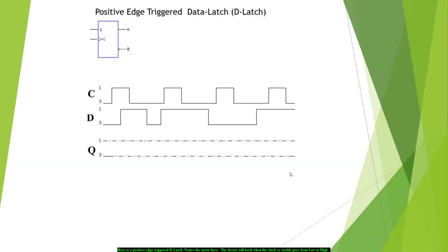Here is a positive edge trigger D-latch. Notice the arrow here. And the device will latch when the clock or enable goes from low to high.